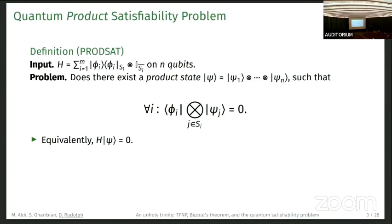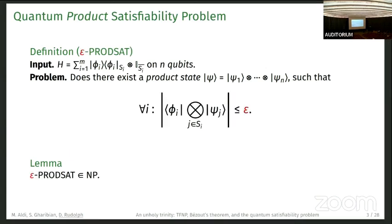This is equivalent to H times ψ equals zero. Now we can efficiently represent a product state because this is just n qubits. But due to accuracy concerns, we actually get epsilon ProdSat here, where we ask that the absolute value of this expression is bounded by some small epsilon.